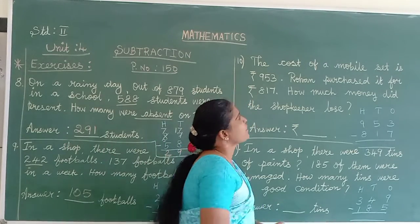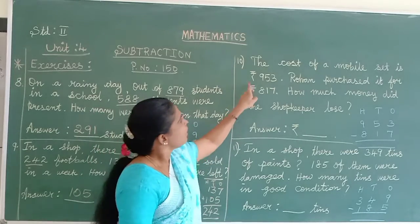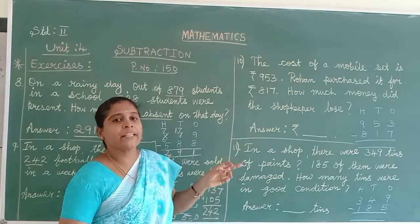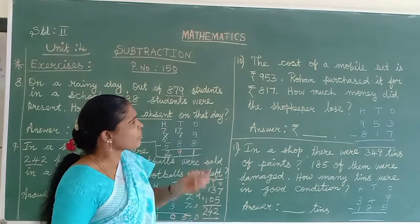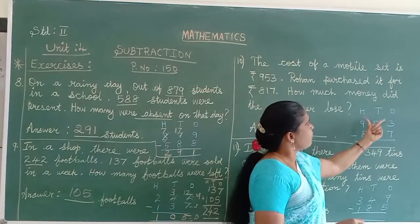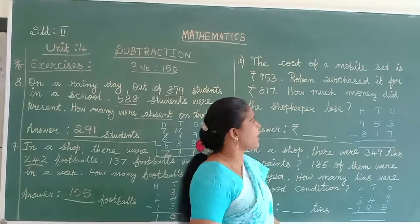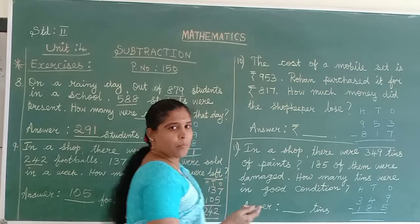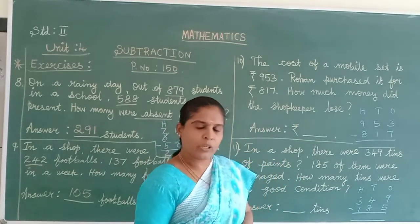The 10th sum. The cost of a mobile set is rupees 953. Rohan purchased it for rupees 817. How much money did the shopkeeper lose? How much is the total amount, the cost of a mobile? How much?